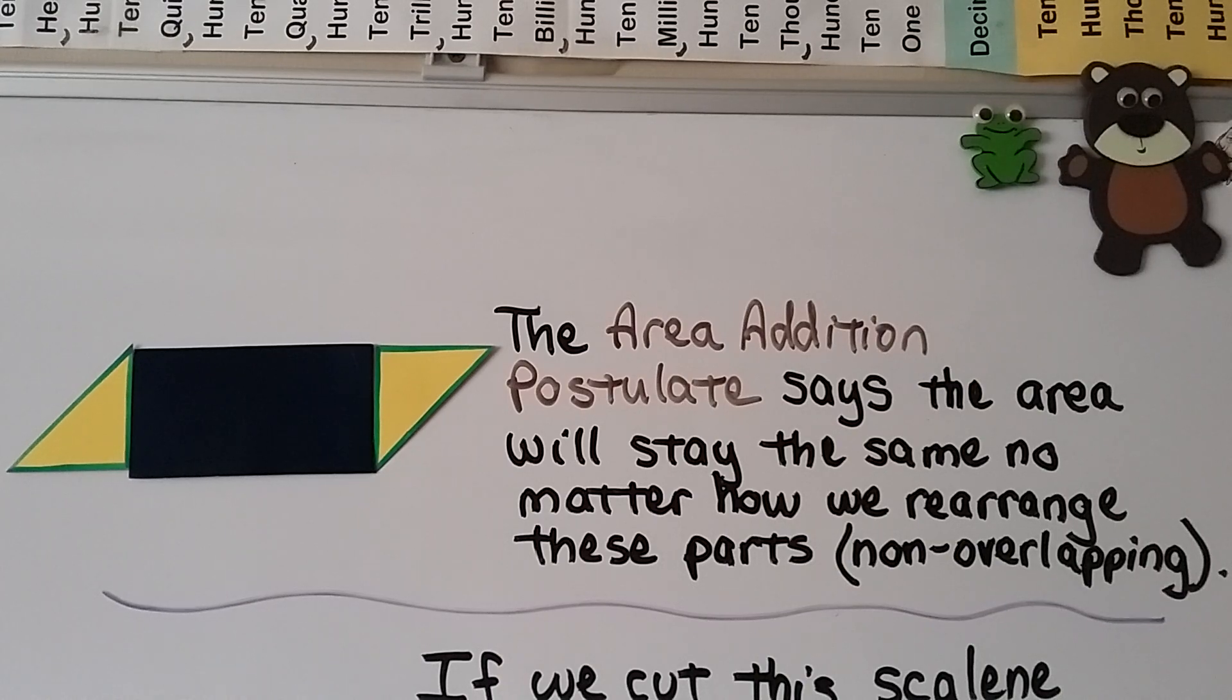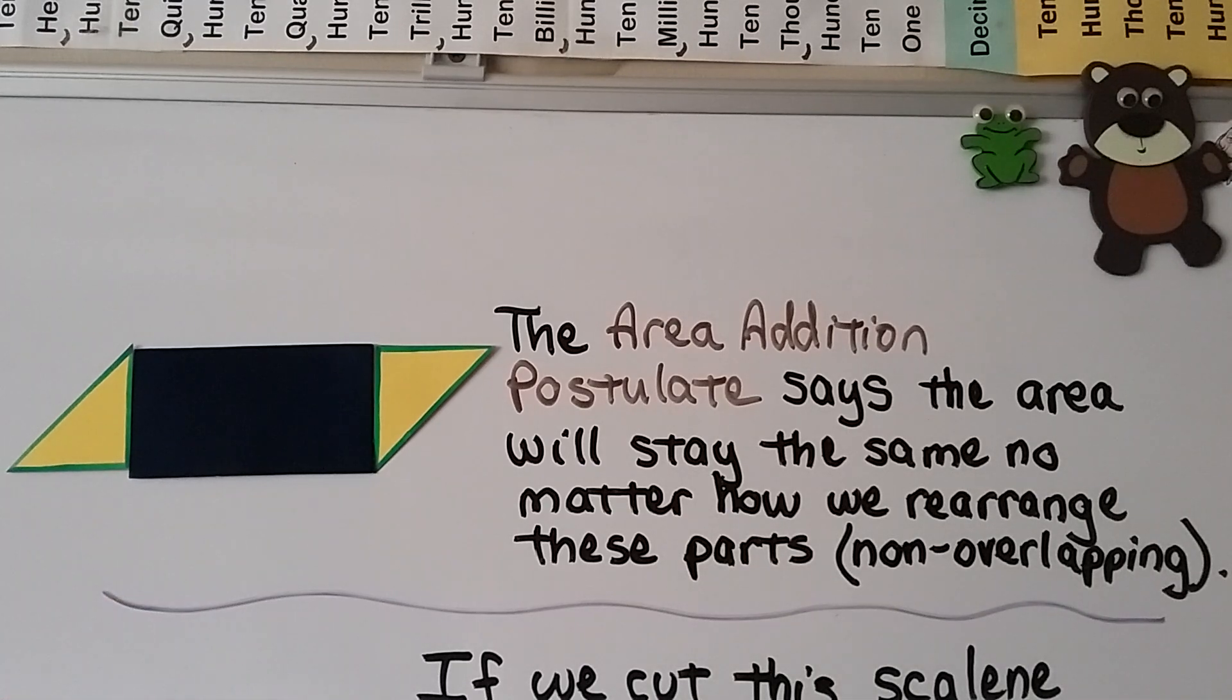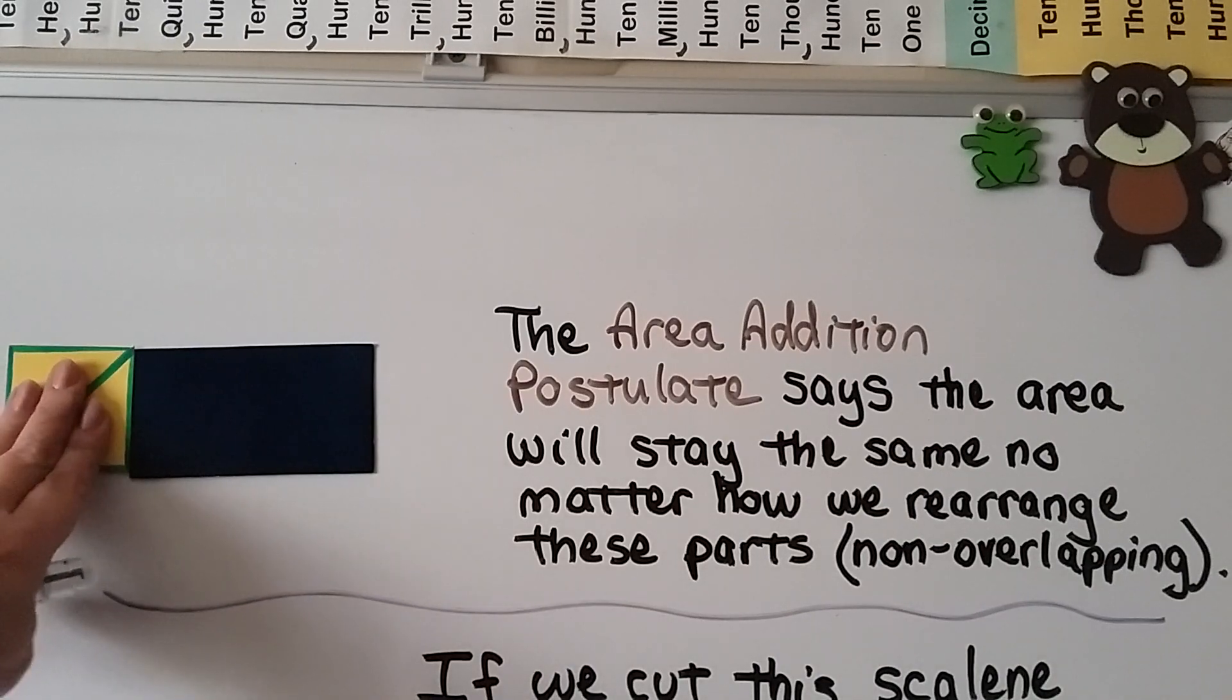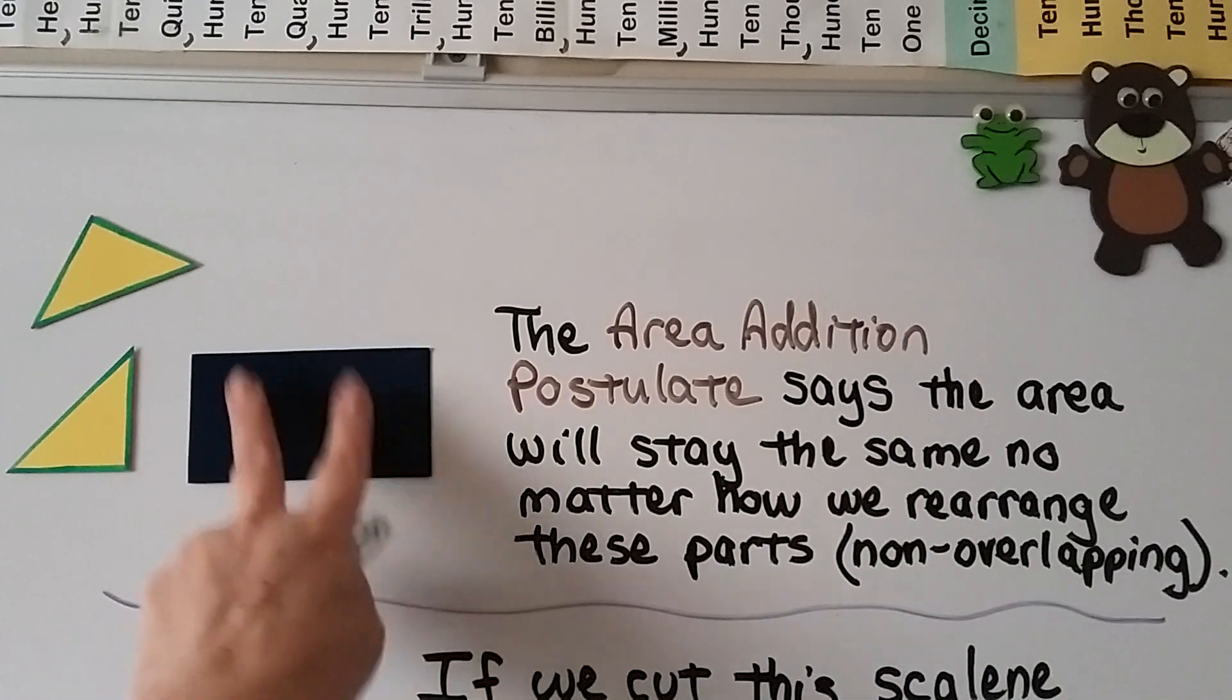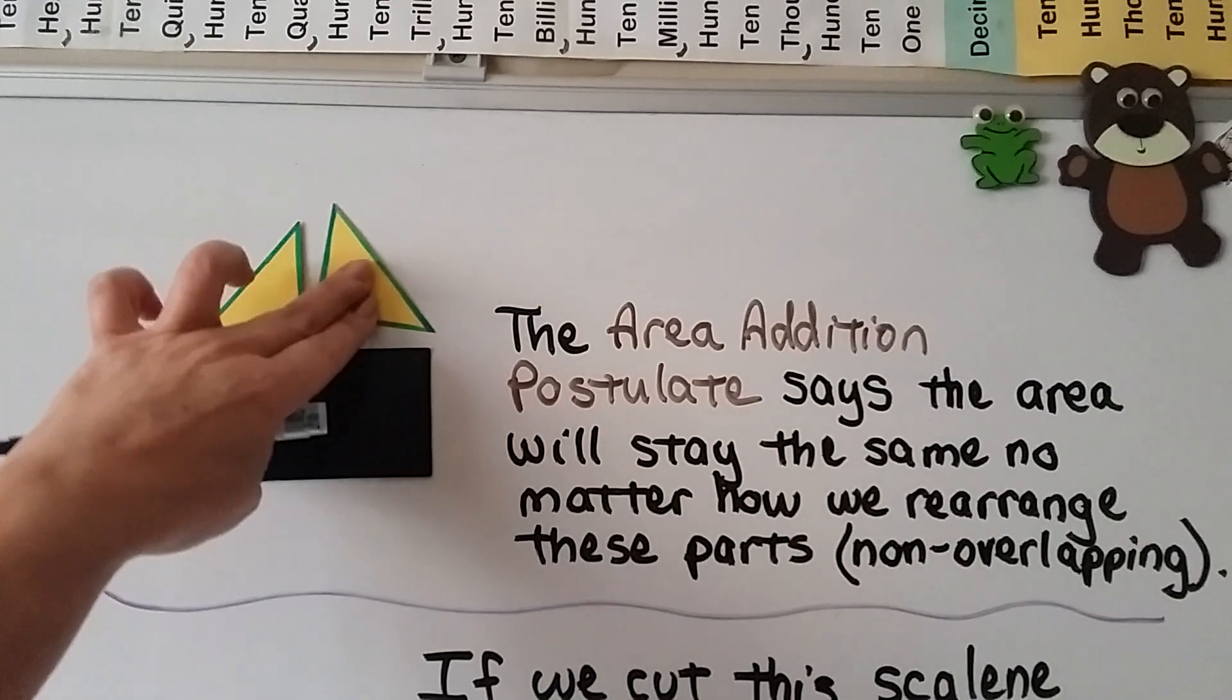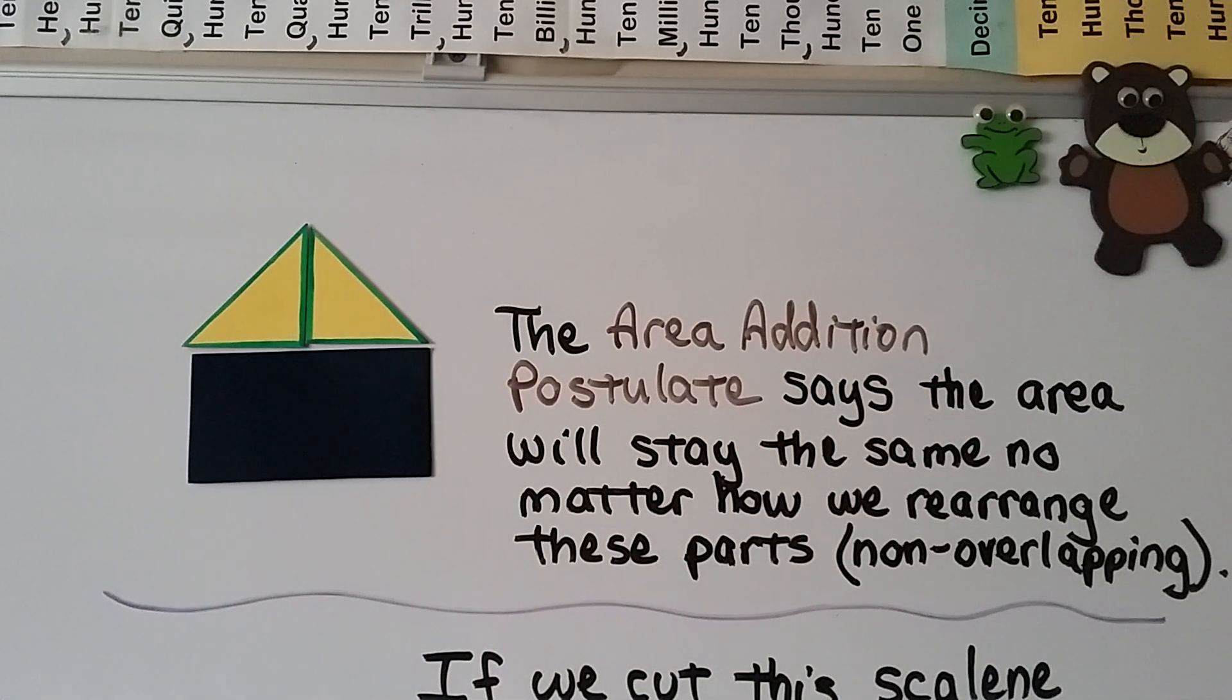The area addition postulate says the area of this parallelogram will stay the same no matter how we rearrange these parts, as long as they're non-overlapping. So I could take this triangle and I could move it over here and make a big rectangle. I could even take them and go like this and make the shape of a house. It still has the same area. It doesn't matter.